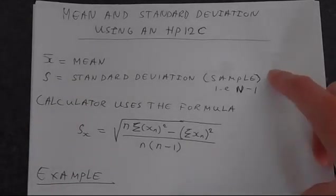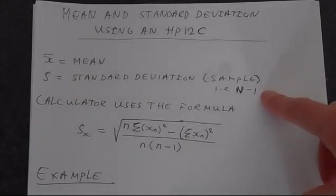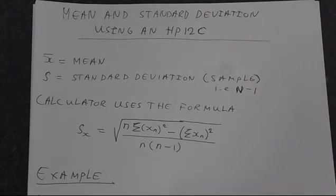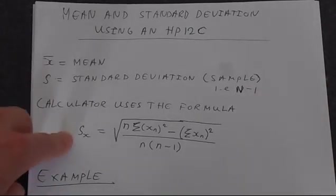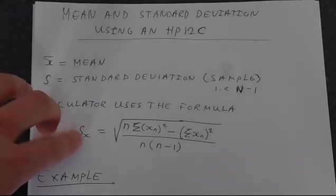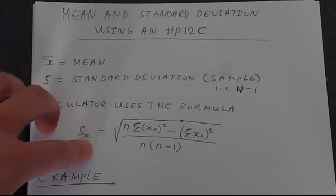And this is your sample standard deviation, which is the one that's got N minus 1 on the bottom. This is the standard deviation that your calculator is able to find. So just for completeness, this is the formula that the calculator uses to find the standard deviation of some data series X.